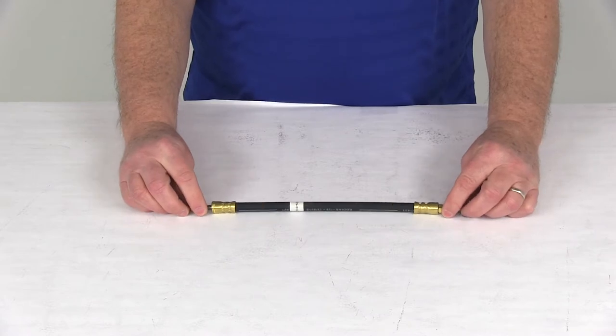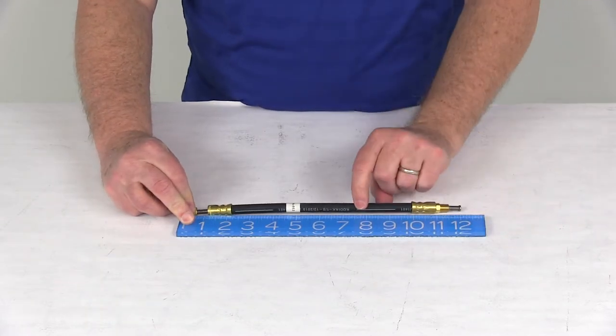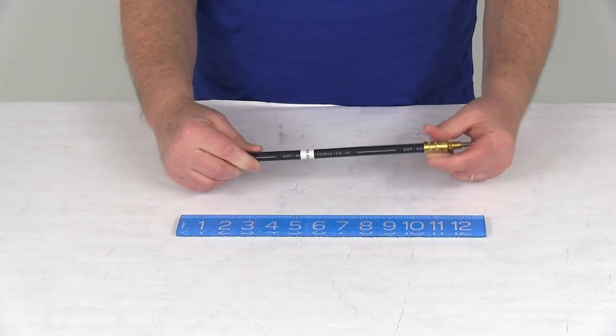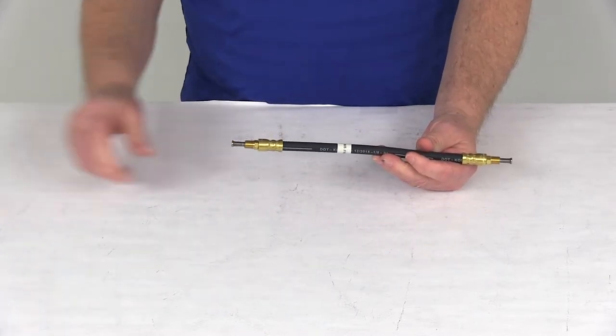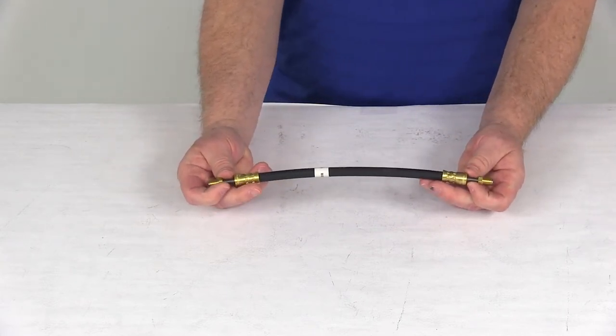Now the total hose length end-to-end including the fittings—if we lay a ruler down here, go end-to-end—you can see right at 12 inches long. The inner diameter on the hose is 1/8 of an inch, and the fitting size is 3/16 of an inch. Thread size is 3/8 inch by 24.